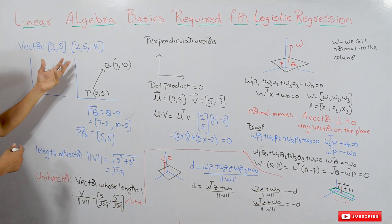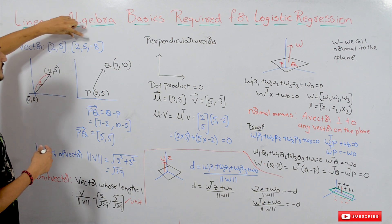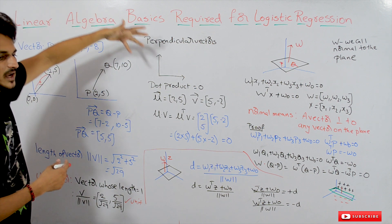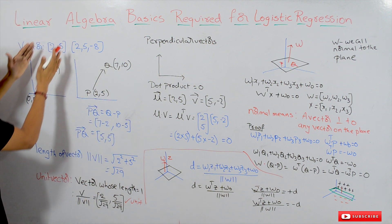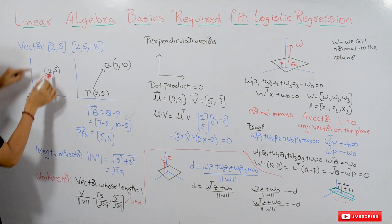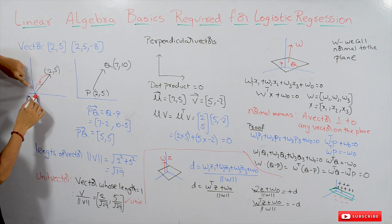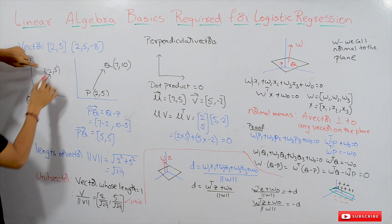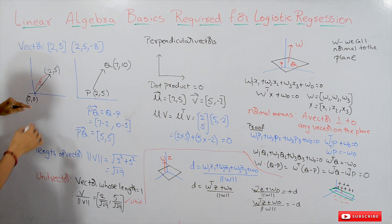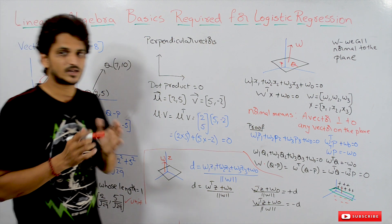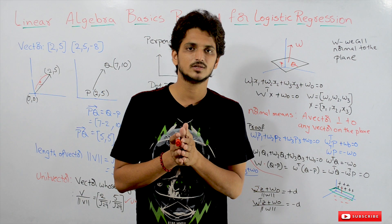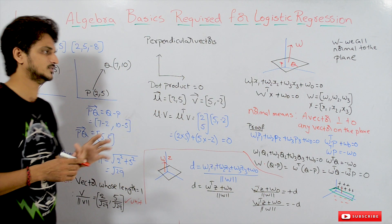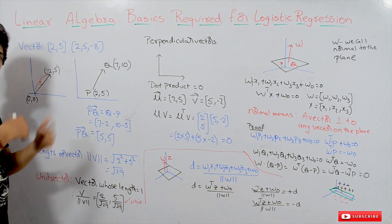In a three-dimensional coordinate system, a vector is given like this: (2,5,-8) or (2,5,7), for example. A vector in a two-dimensional coordinate system — say (2,5) — starts at the origin (0,0) and ends at (2,5). Does a vector have to start from the origin? No, it is not compulsory. A vector can start at any point.